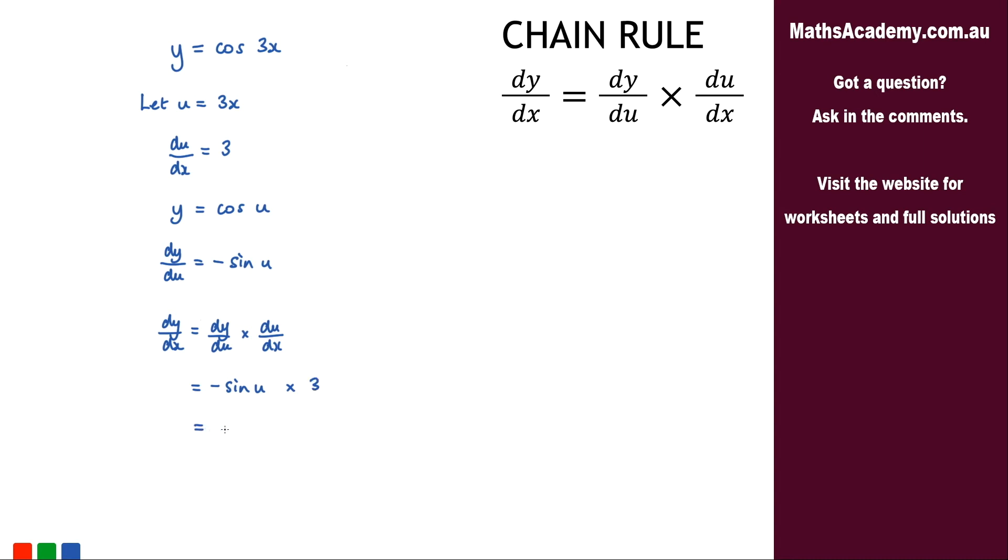And if we just simplify that a little bit we get negative 3 sine of u.